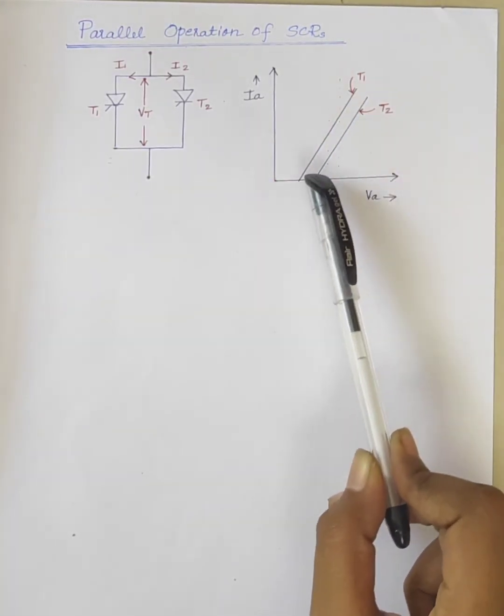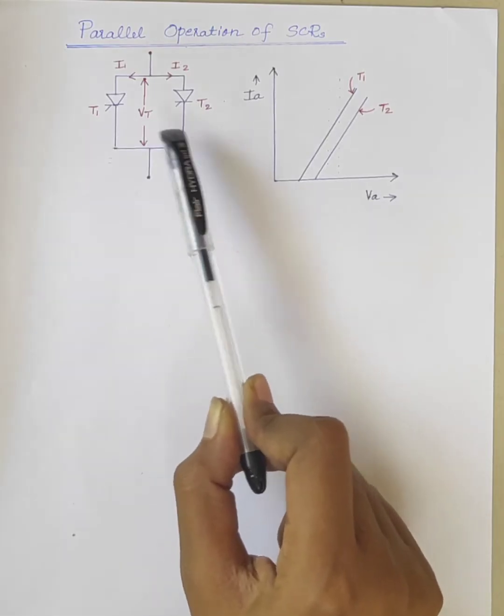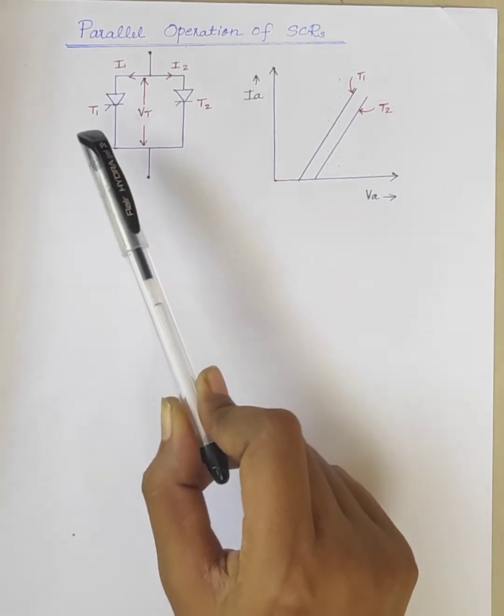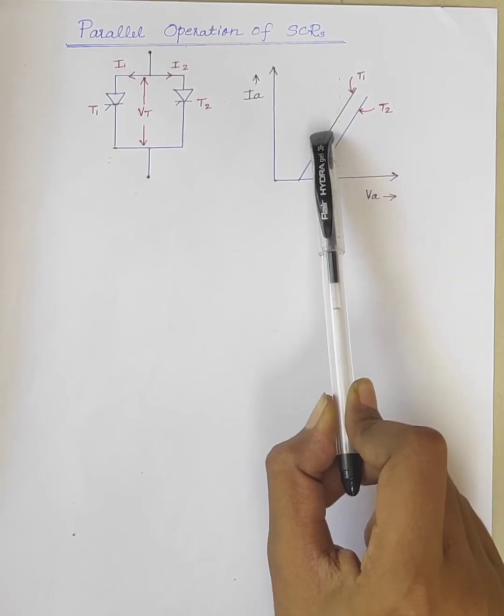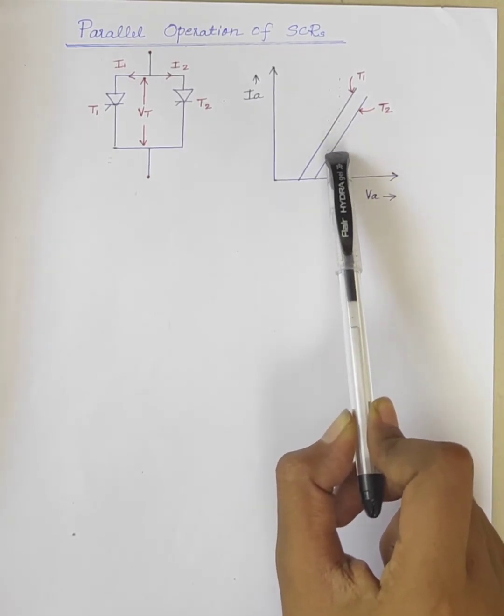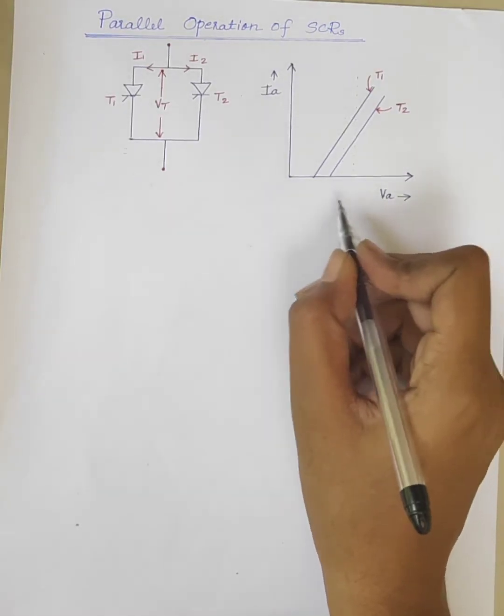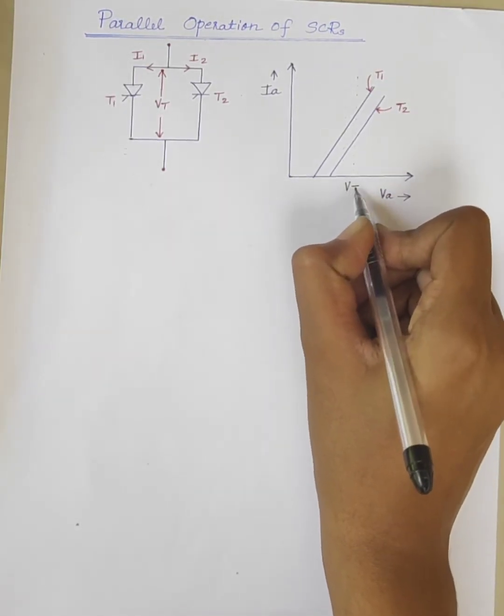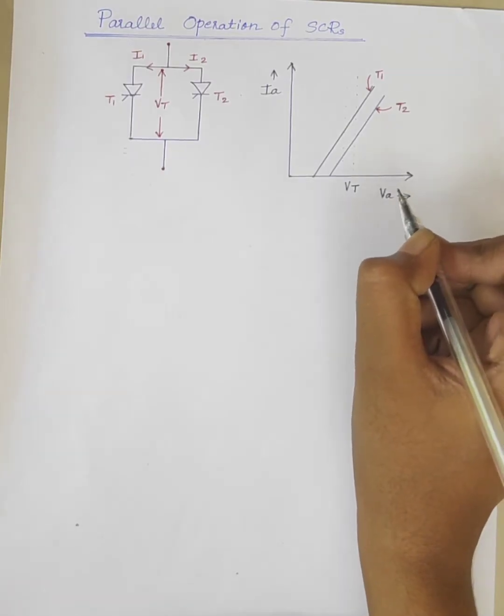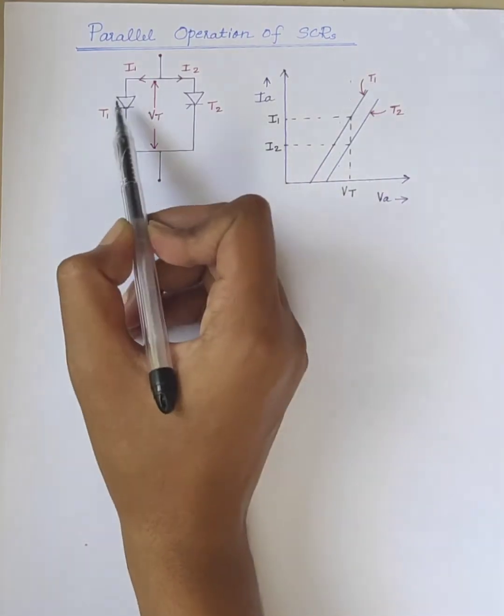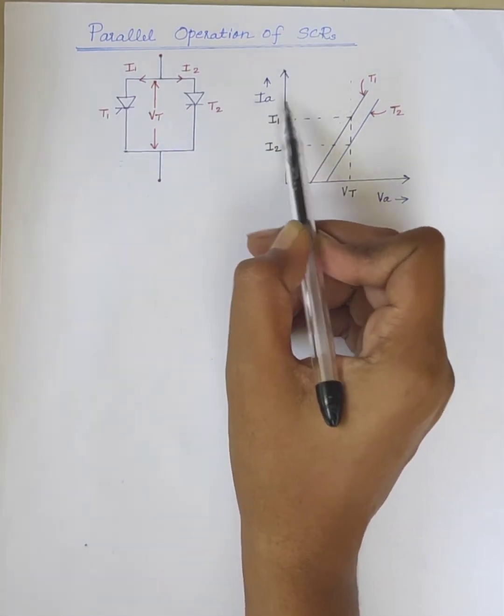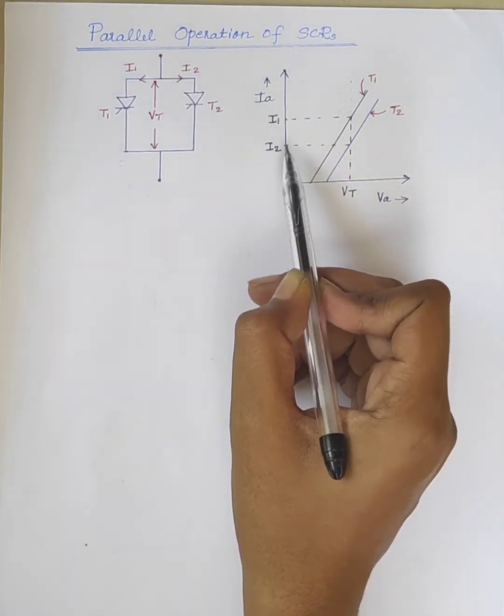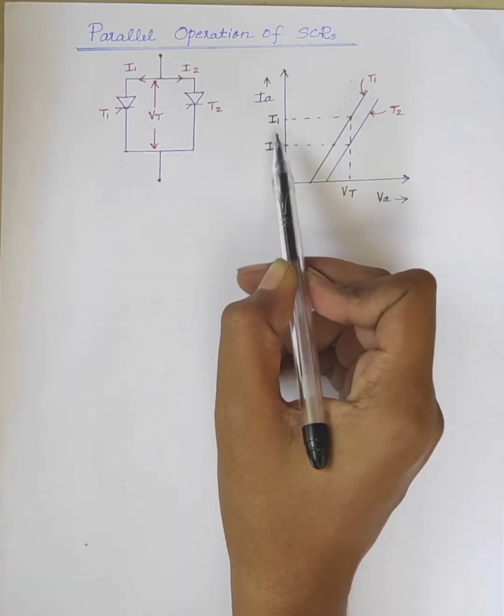Consider the VA characteristics of two parallel connected SCRs, T1 and T2. This is the characteristic of T1 and this one is the characteristic of T2. For a particular forward voltage drop VT, we can see that the current flowing through SCR1, that is T1, is I1 and current flowing through T2 is I2.